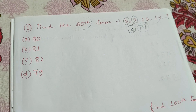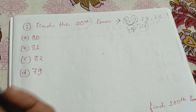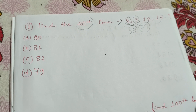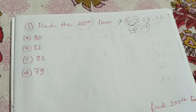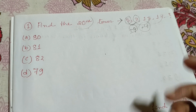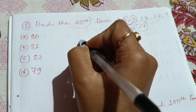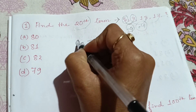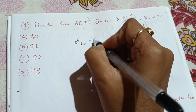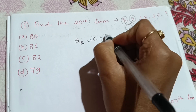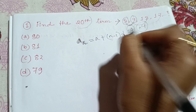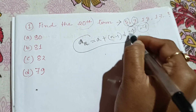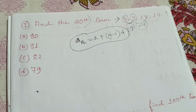The important formula is: aₙ is equal to a plus, within bracket, n minus 1 into d. This is the important formula for arithmetic progression.